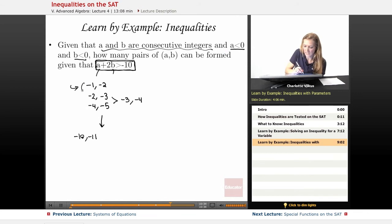So here if I were to choose negative 1, negative 2 as my set, then I would have negative 1 plus 2 times negative 2 being greater than negative 10. And here that would